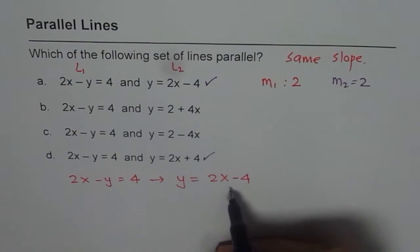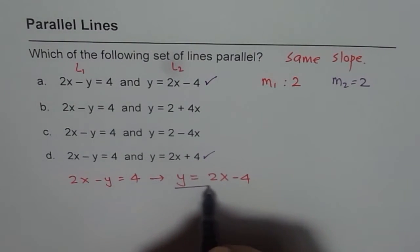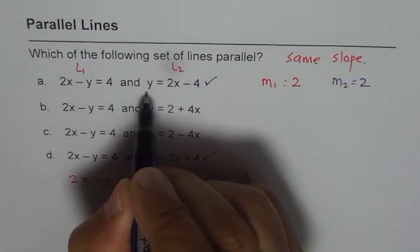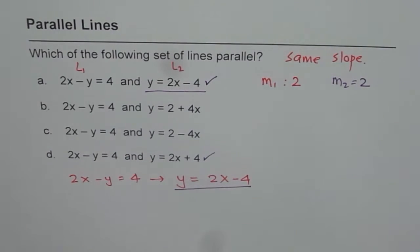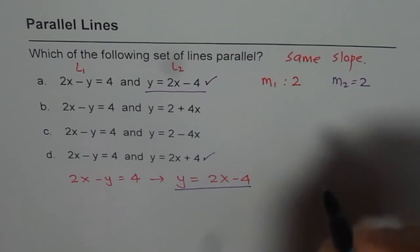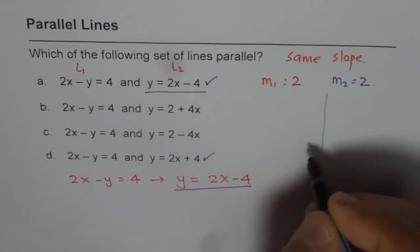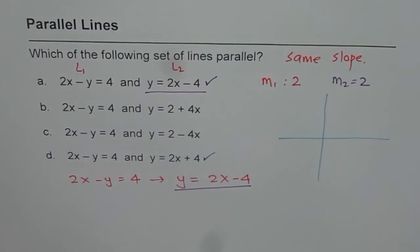Well if you compare the equations you will find that y equals to 2x minus 4, y equals to 2x minus 4 are exactly same lines. They are coincident. They are not parallel. Let me graph and show you. I feel this is extremely important for all my students to understand.